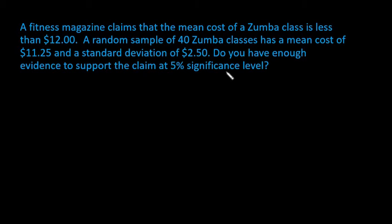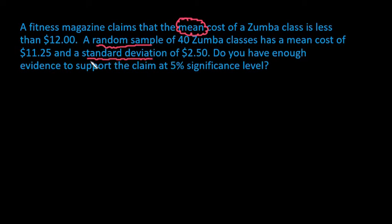The 5% significance level is the same thing as your alpha level. With this, we know that we are doing a hypothesis test for the mean. Our two options are either a Z-test or a T-test. You use the Z-test if you know a population standard deviation, and you use a T-test if you know a sample standard deviation. So if we read through this, it tells us that we have a random sample, and part of this random sample is that it has a mean cost of $11.25.